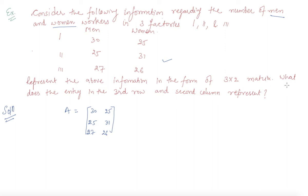Now, what he asked us next is, what does the entry in the 3rd row and 2nd column represent? The 3rd row is 1, 2, 3, and this entry is 26. This entry represents the number of women workers in factory number 3.